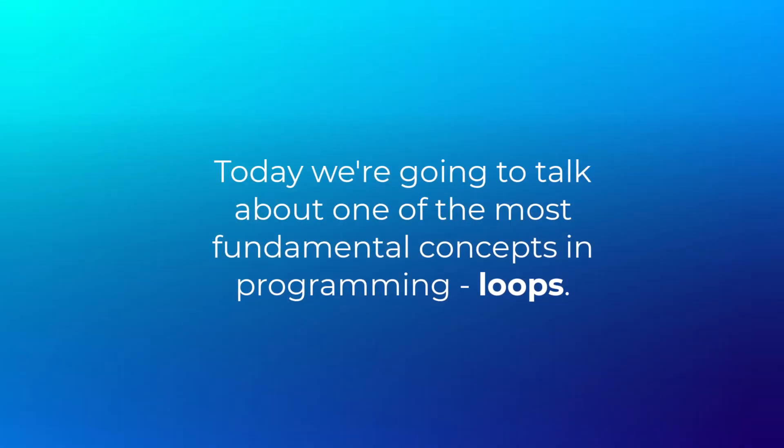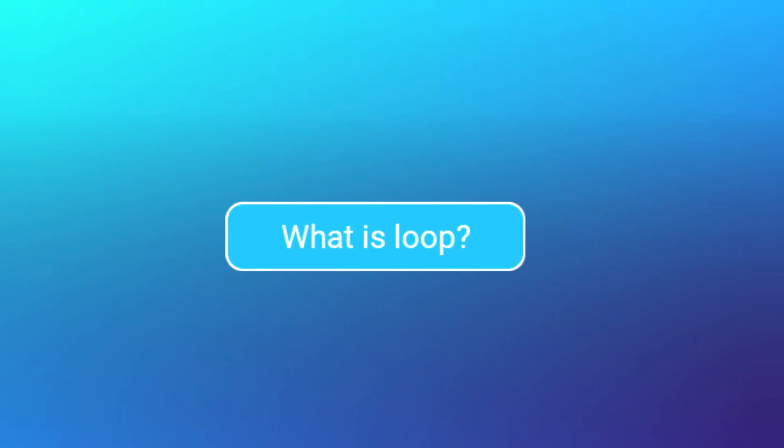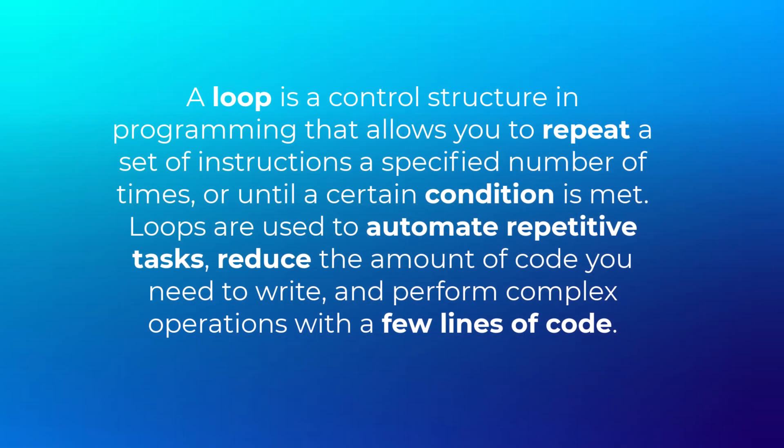Hi everyone, today we're going to talk about one of the most fundamental concepts in programming: loops. A loop is a control structure in programming that allows you to repeat a set of instructions a specified number of times or until a certain condition is met. Loops are used to automate repetitive tasks, reduce the amount of code you need to write, and perform complex operations with a few lines of code.